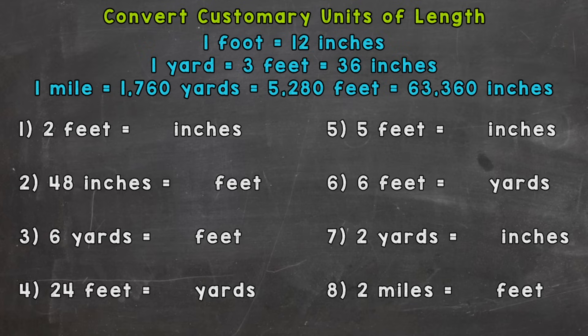As you can see, there are eight problems — eight conversions — that we're going to go through together in order to help you get this down. Up top in blue at the top of your screen are some very helpful reference notes that you can use when you're doing conversions.